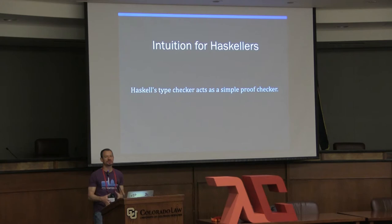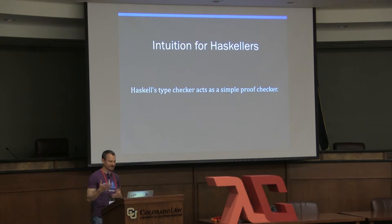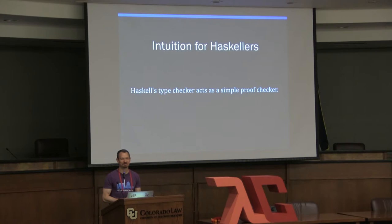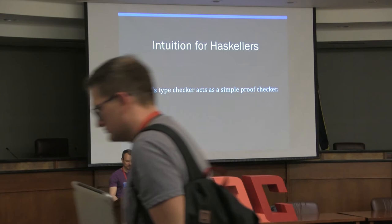A very simple intuition for Haskellers: Haskell's type checker acts as a simple proof checker. This suggests a simple two-step procedure for proving a proposition. First, translate it into a type signature. Second, try to create an inhabitant of that type — which will usually be a function — and see if it type checks. If it does, you've proved the proposition. It's that simple, and the rest of the talk unpacks that.